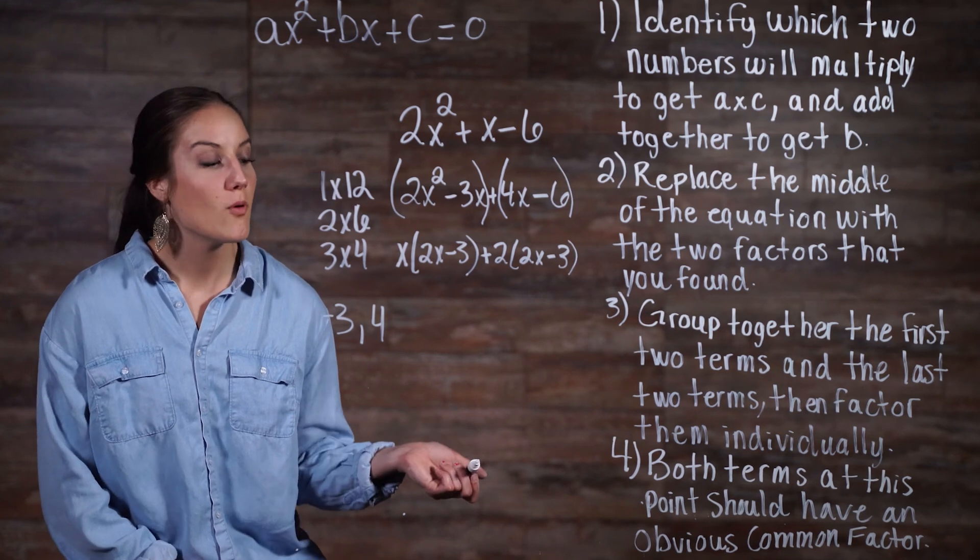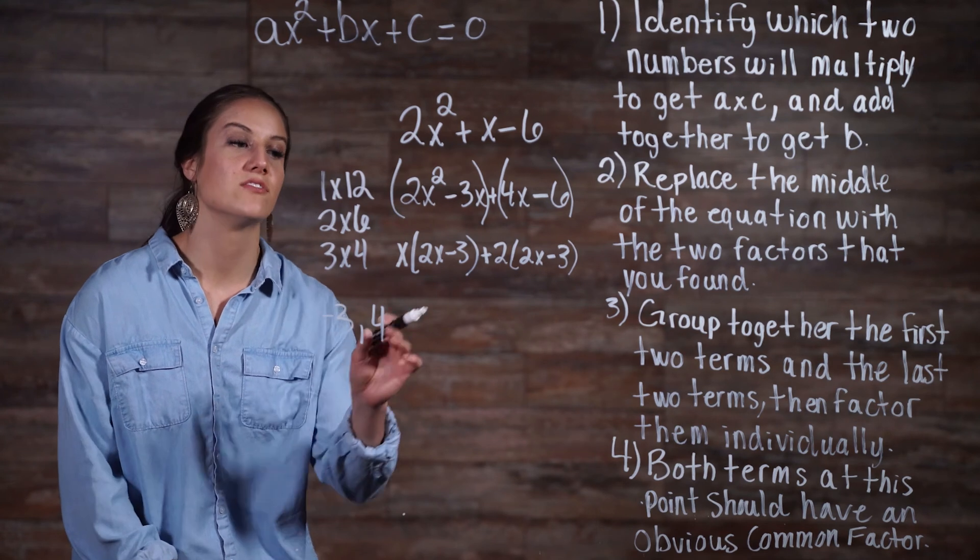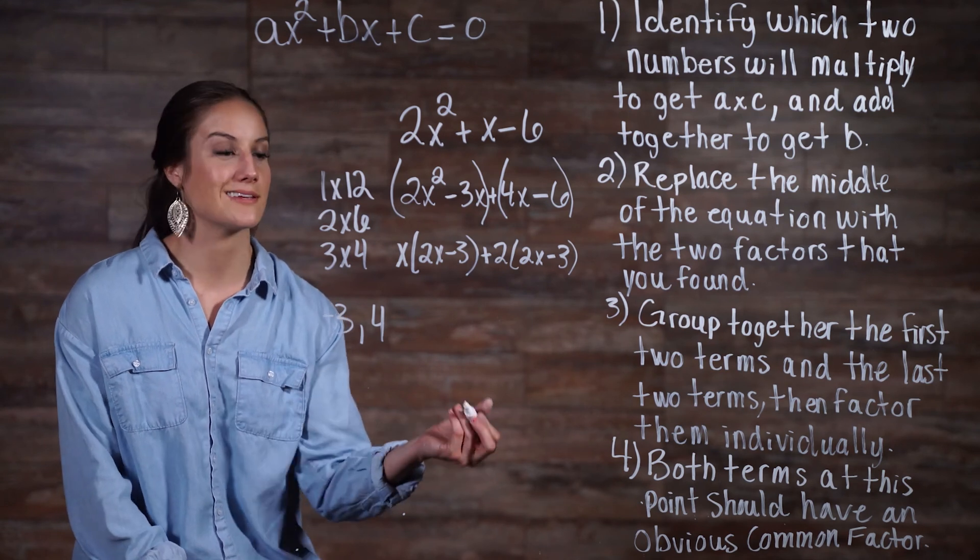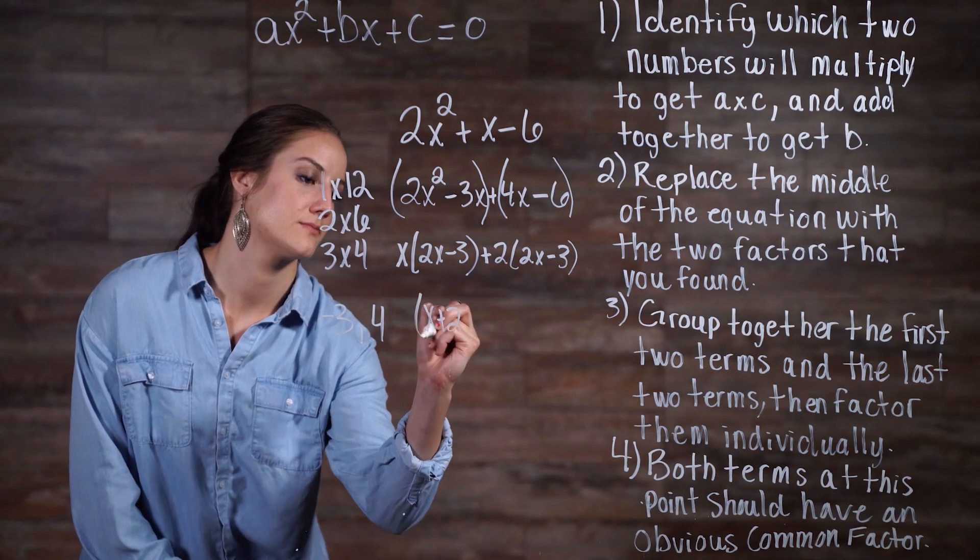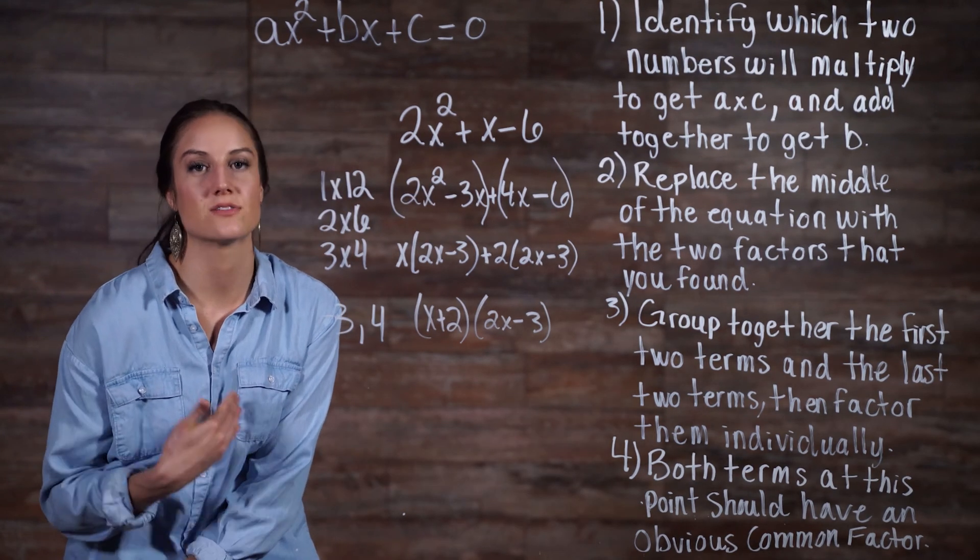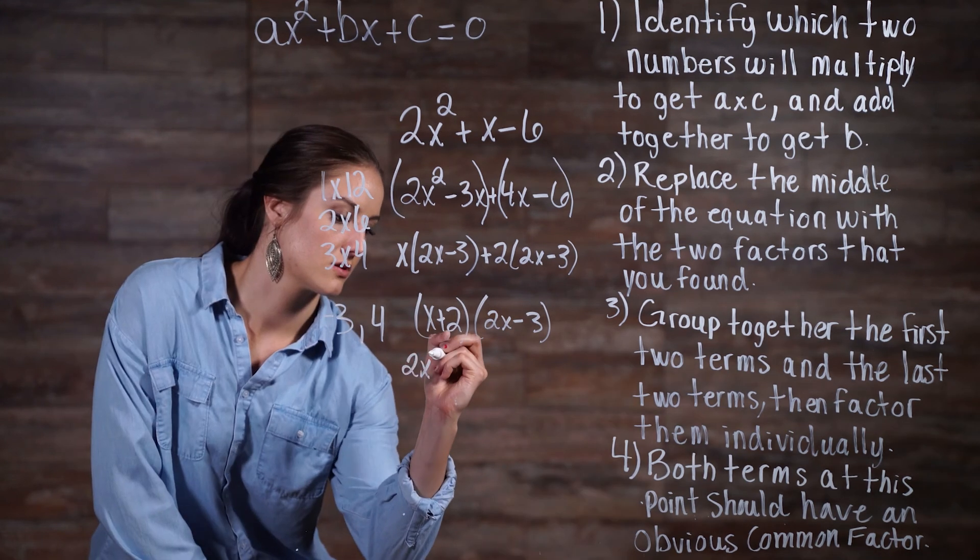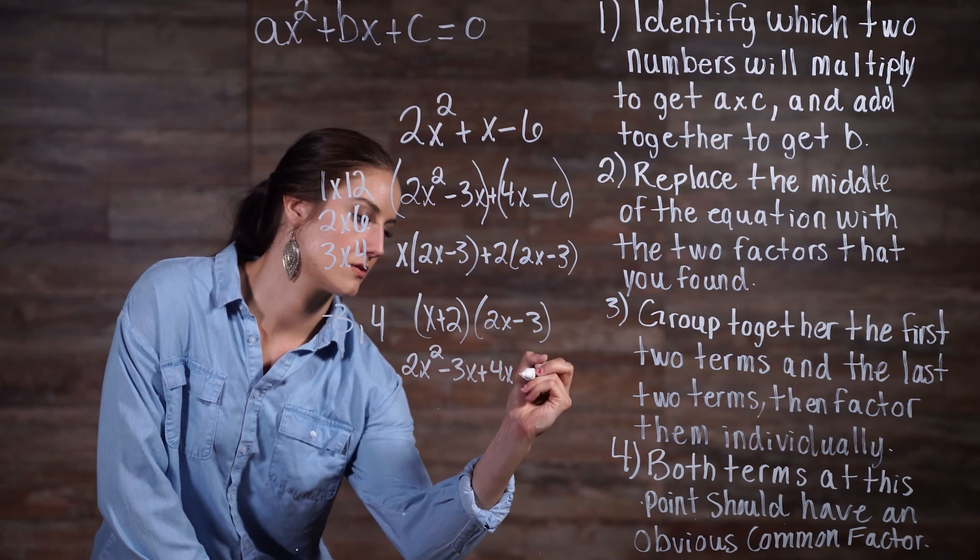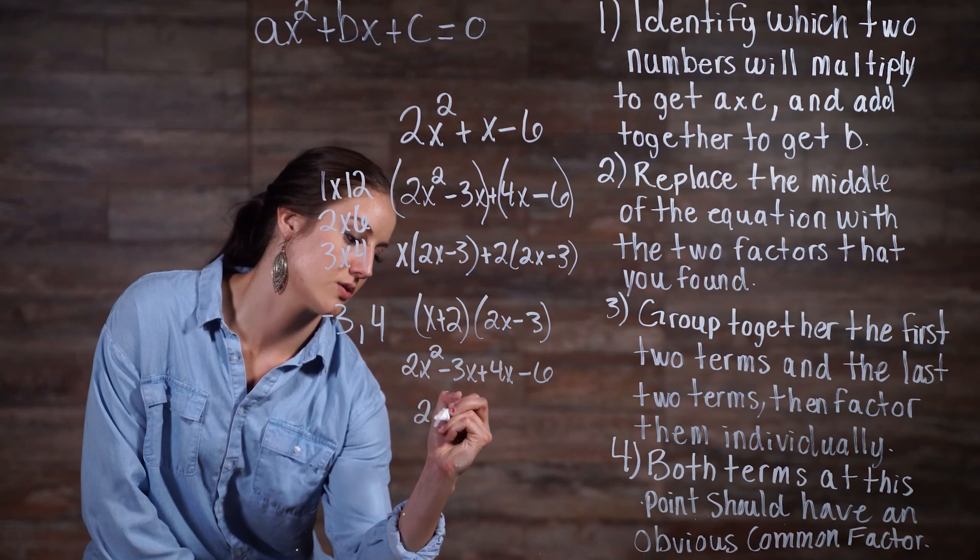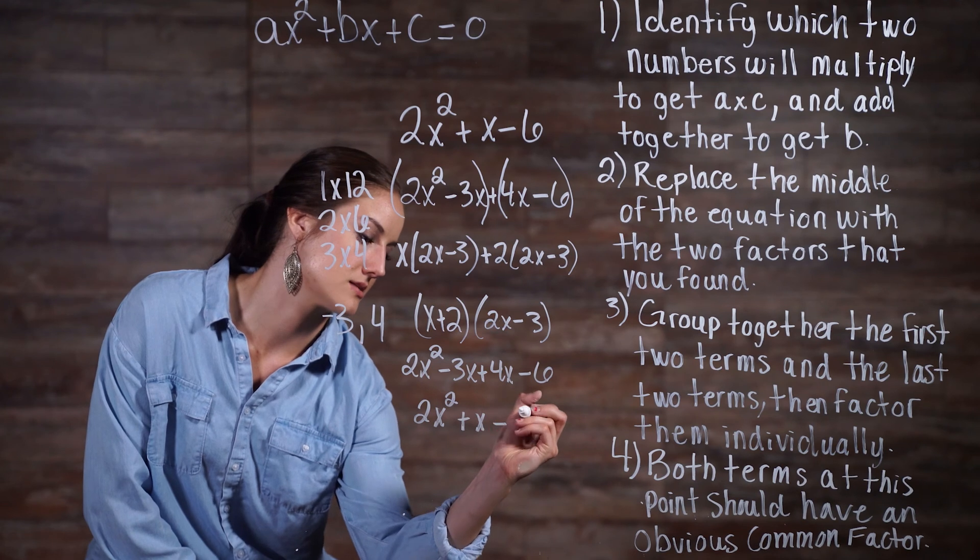Now lastly, step 4 tells us that we should be able to see an obvious common factor, which we have. 2x minus 3 is a common factor in both of our terms. So we can write this as x plus 2 times 2x minus 3, and we have our answer. To check this, we can multiply this out to see if we get our original expanded quadratic equation. And when we simplify this even further, we would have our original equation 2x squared plus x minus 6.